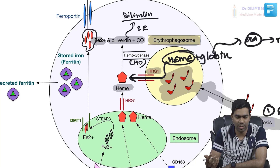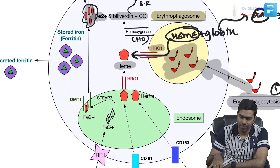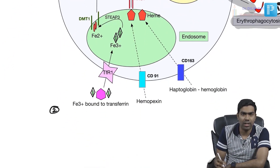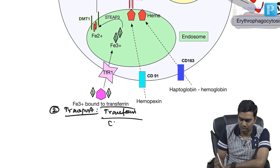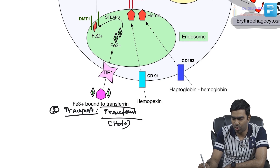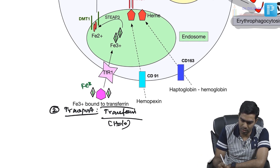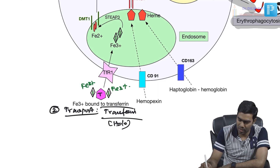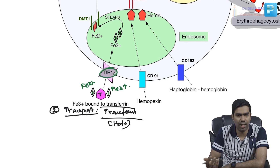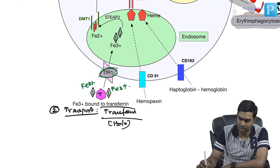This is only one source of iron for the macrophage. The second source of iron comes from the transported form — transferrin, or holotransferrin, or diferric transferrin. I have drawn two Fe3+ molecules bound to a transferrin molecule, making it diferric transferrin. There are specialized transferrin receptors on the cell membrane — transferrin receptor 1 — which have high affinity for taking up transferrin.